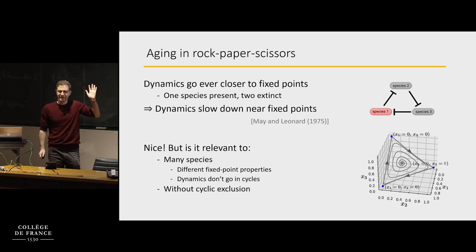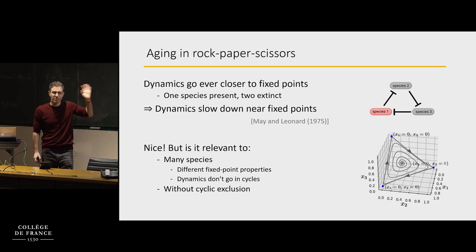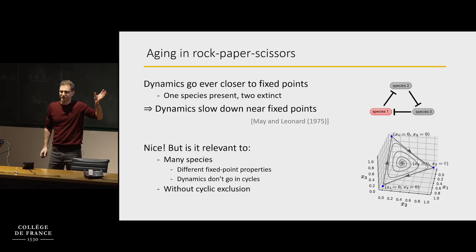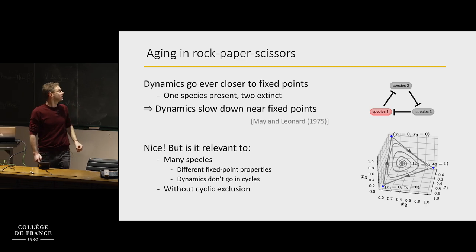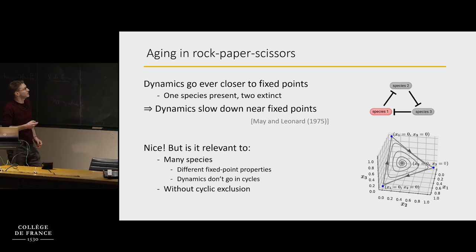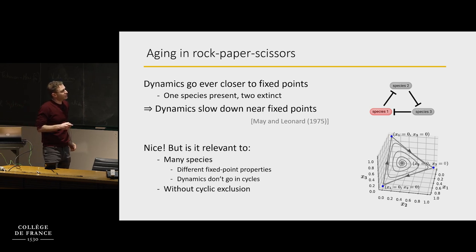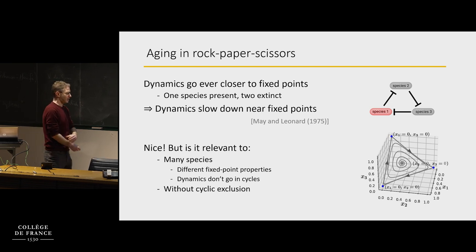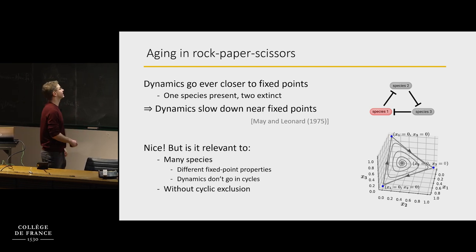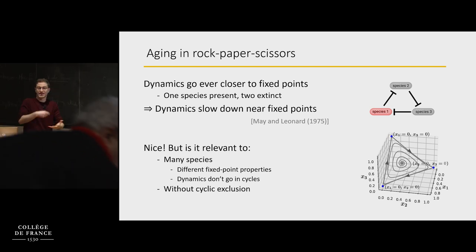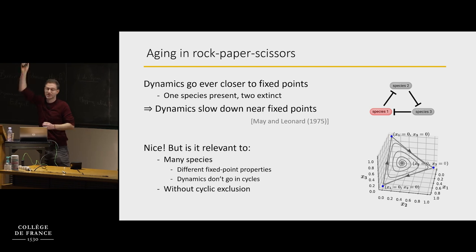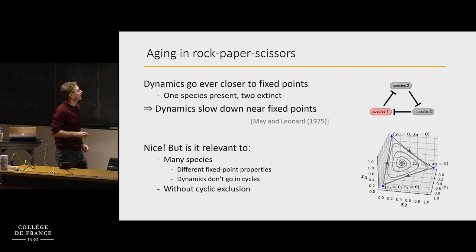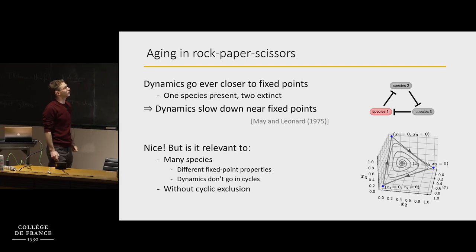The question is how relevant is this to a situation with not three but 500 variables. When you have many species, you don't have three fixed points all with the same properties — you have a range of fixed point properties, some more stable, some less stable. Dynamics don't go in cycles; they go in this direction, then that direction, then a third direction. We have to take what we can from this but also try to see what happens when many species are around.